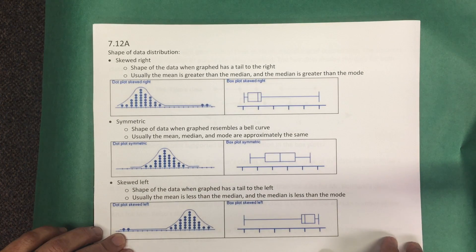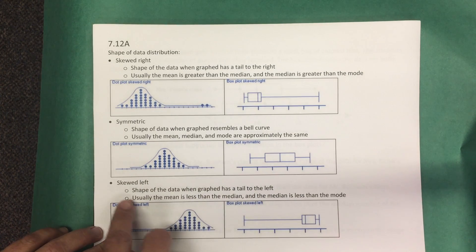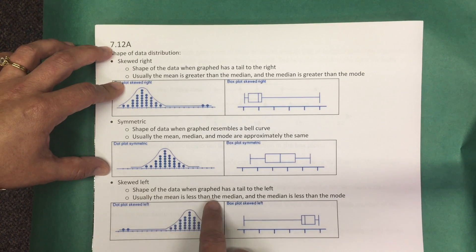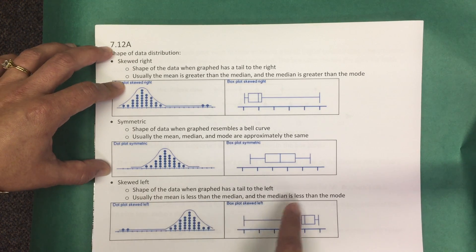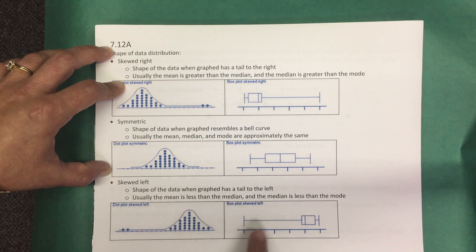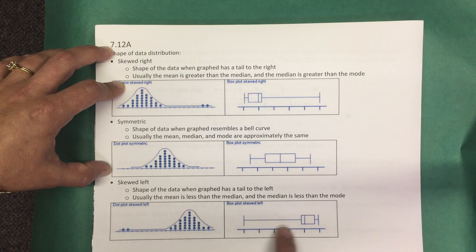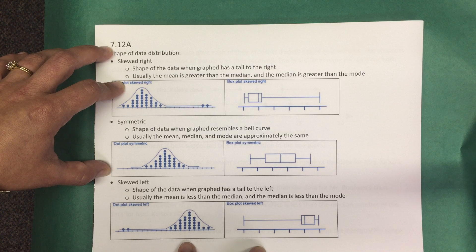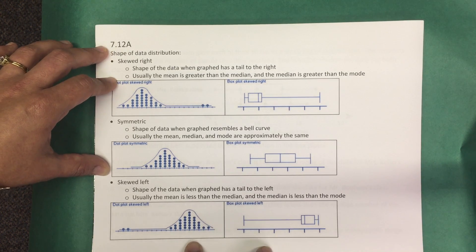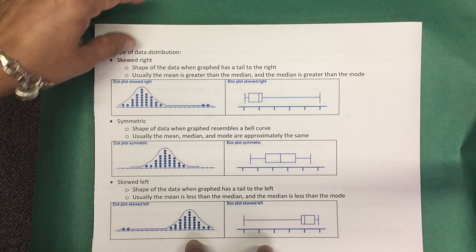When the data is skewed left, the shape of the data when graphed has a tail to the left. Here in this dot plot you can see we have a tail to the left, and in this box plot we also have a tail to the left. So this representation would be referred to as skewed left.